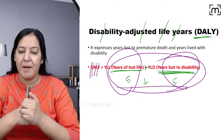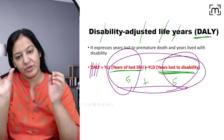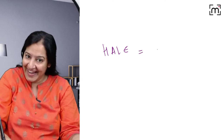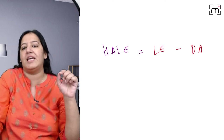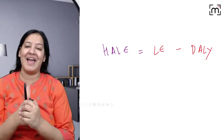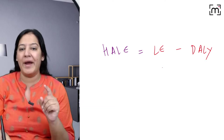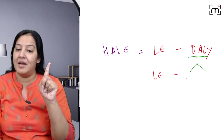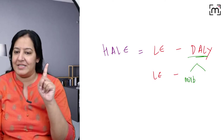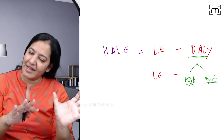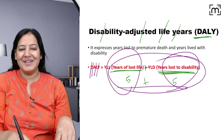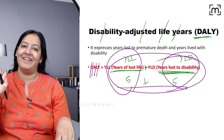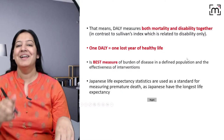In my example, morbidity was five years and premature death was also five years, so total DALY is 10. Basically: HALE equals life expectancy minus DALY. DALY is the two things — years lost in disability (YLD) and years of life lost due to premature death (YLL). The summation of those two is DALY.